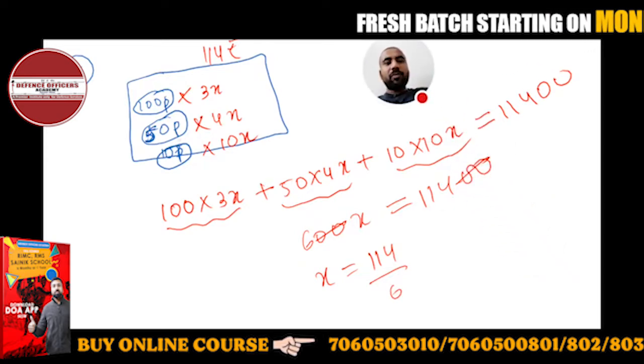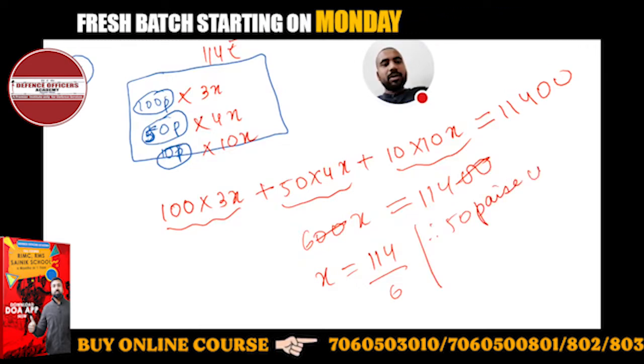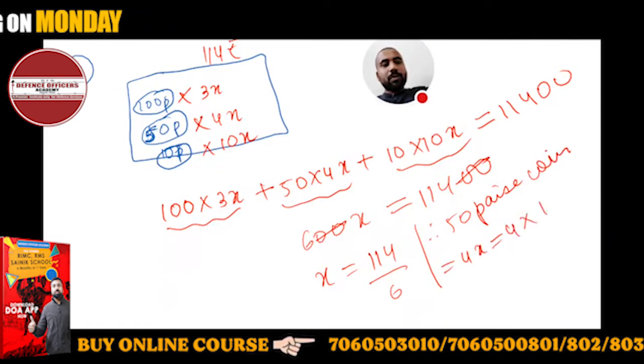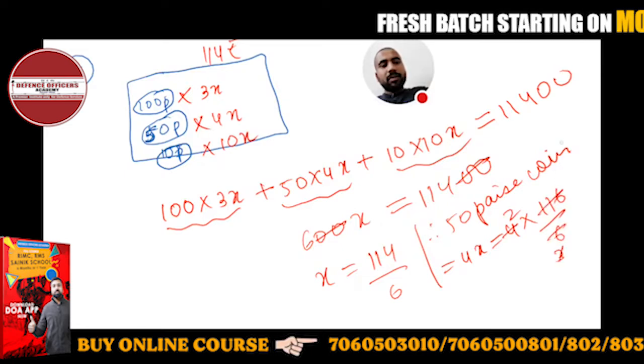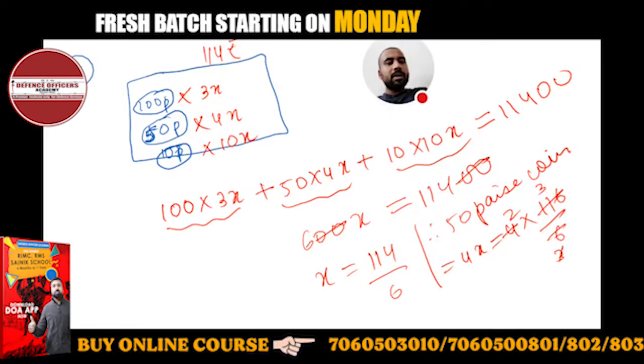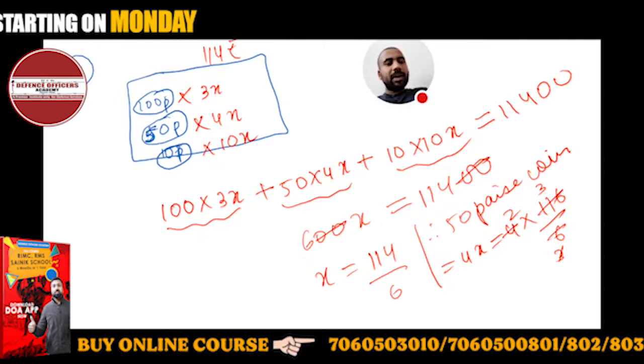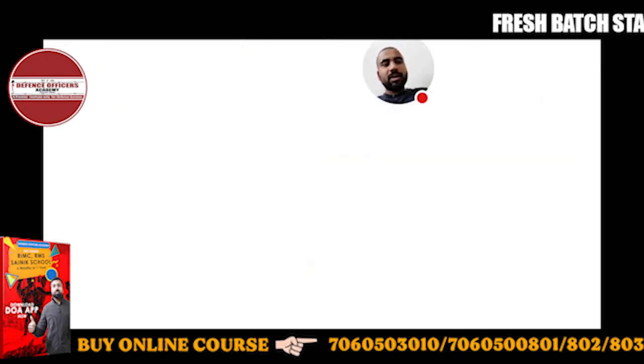Then what you have to find? You have to find 50 paisa coins. Therefore 50 paisa coins are 4x. 4x means 4 into 114 upon 6. So sorry, 114 is there, I have written 116. Let me correct that. So here it is 114.